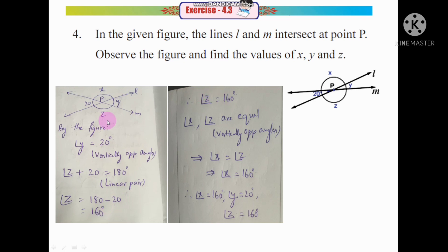So Z value is 160 degrees. Since X and Z are vertically opposite angles, X is also equal to Z, meaning X equals 160 degrees. Therefore, angle X is 160 degrees, angle Y is 20 degrees, and angle Z is 160 degrees.